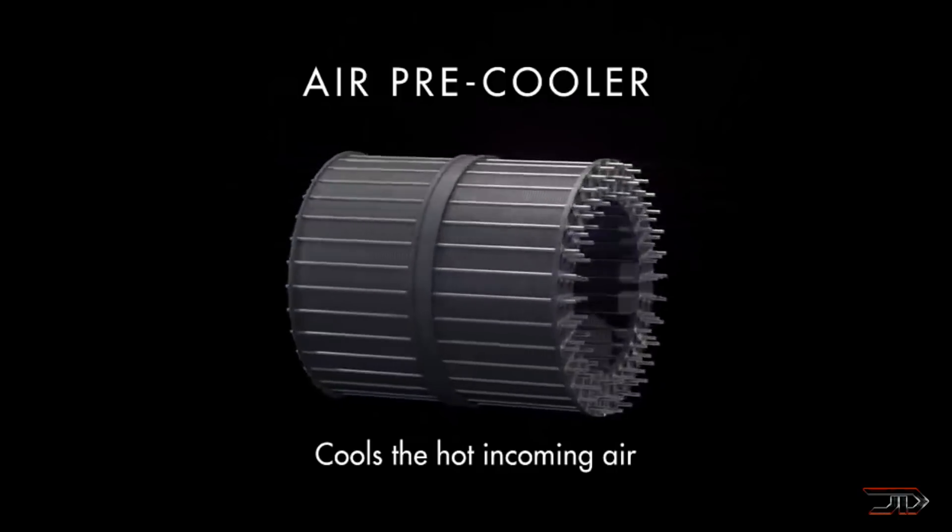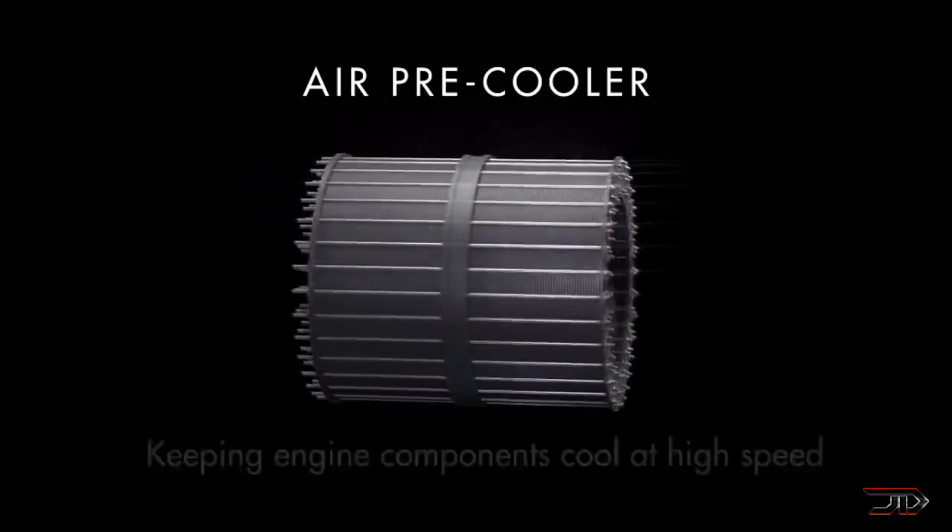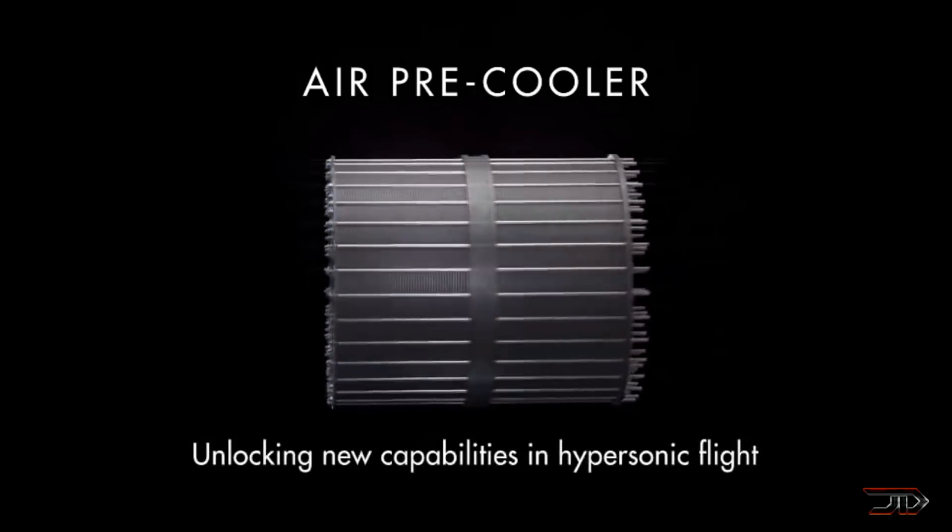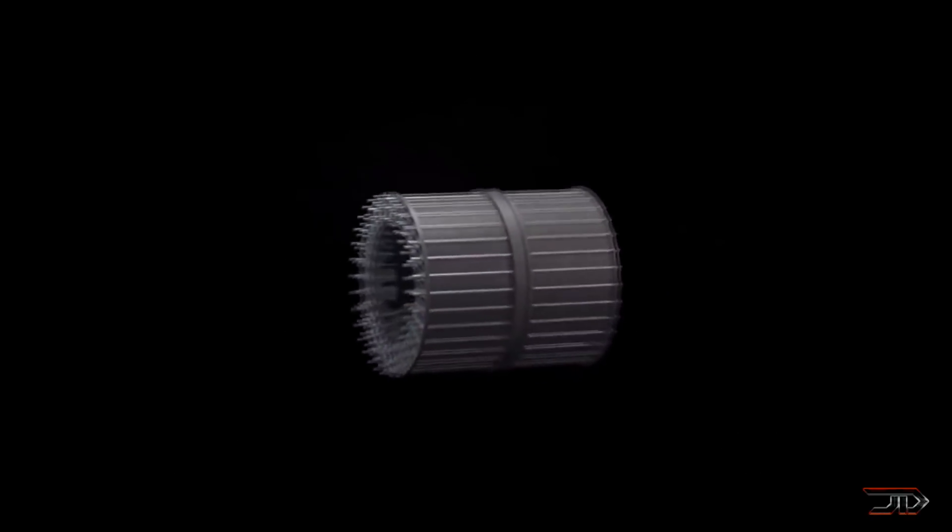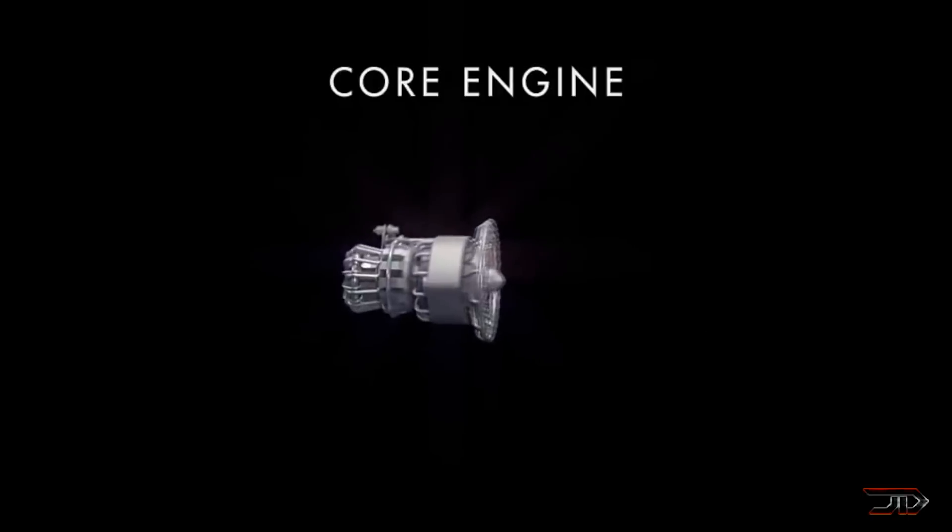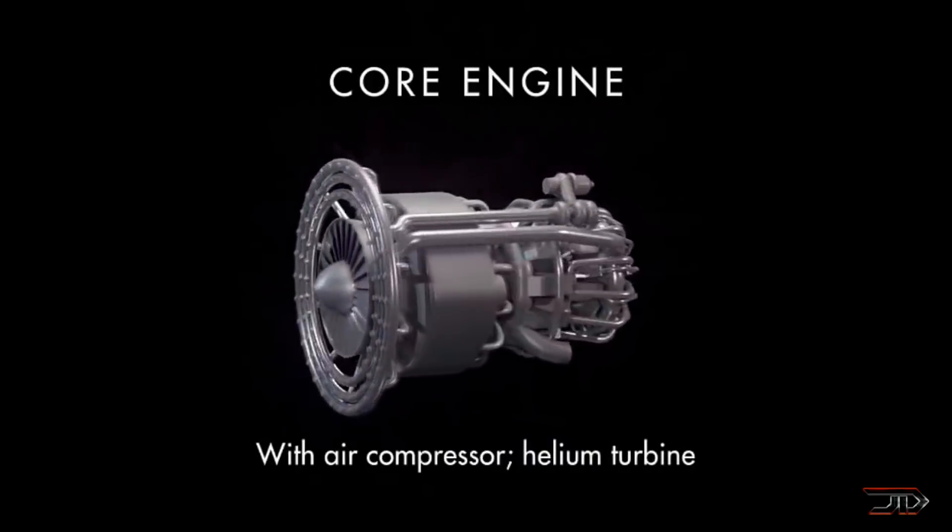Mach speeds generate enormous amounts of heat. So its pre-cooler is designed to cool incoming air from more than 1000 degrees Celsius to ambient temperature in a fraction of a second. The company has already completed testing of its heat exchanger and hydrogen pre-burner. These components apply heat, energy, and air into the core of the engine. So there has been quite a bit of recent progression.